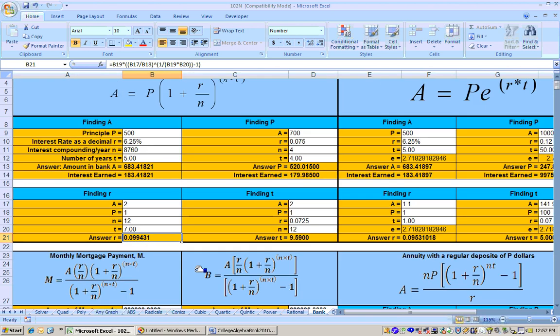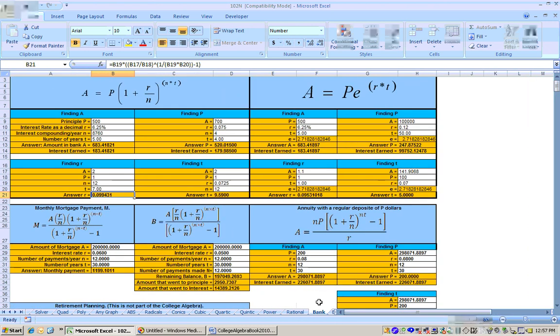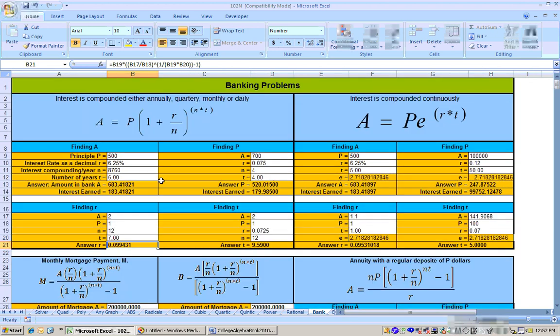Now, real quick, I wanted to show you what this sheet looks like when you zoom out here a little bit. This sheet has all this area on the left-hand side is for any time your money is compounded in some discrete way like annually, quarterly, monthly, or daily. And over here is the same four things, finding the amount, finding the principal, finding the rate, or finding the time, the amount of years, if your money is compounded continuously.